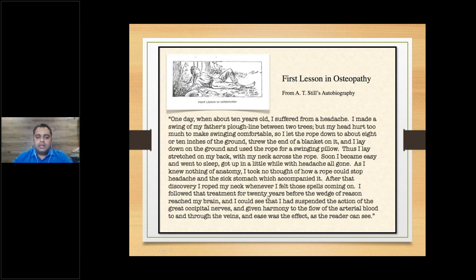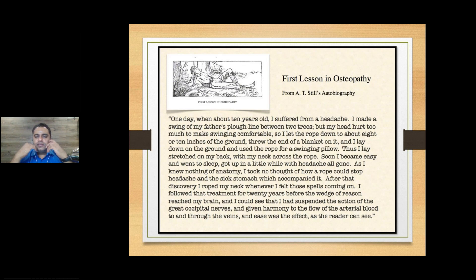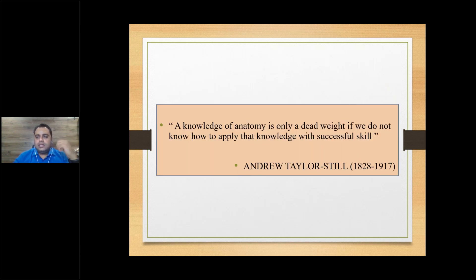After that discovery he wrote: 'I followed that treatment for 20 years before the wedge of reason reached my brain, and I could see that I had suspended the action of the great occipital nerves and given harmony to the flow of arterial blood to and through the veins.' After learning anatomy at an osteopathy school, he understood that resting on the rope had suspended the action of the occipital nerves and improved blood flow to the head — and that's what led to extensive study and research in osteopathy.